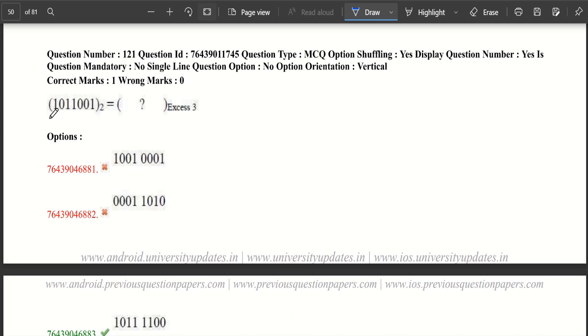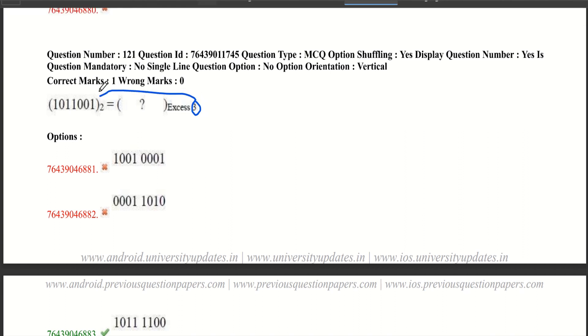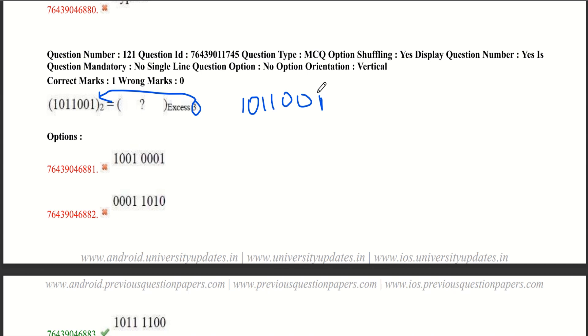Now let's get into our next question. The question is given as, here it is given a binary number and it is asked to convert into XS3. XS3 is nothing but, we have to add 3 to this binary number in a specific manner. Here we will see how it is converted. The question is given 1011001.